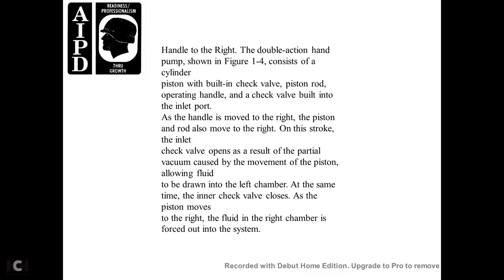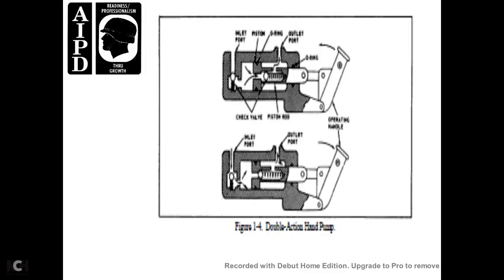The double-action hand pump shown in figure 1-4 consists of a cylinder, piston with built-in check valve, piston rod, operating handle, and check valve built into the inlet port. When the handle is moved to the right, the piston rod also moves to the right. On this inlet stroke, the inlet check valve opens, creating a partial vacuum caused by the movement of the piston, allowing fluid to be drawn into the left chamber. At the same time, the internal check valve closes as the piston moves right, and the fluid in the right chamber is forced out into the system.